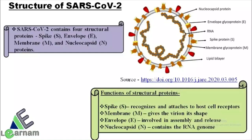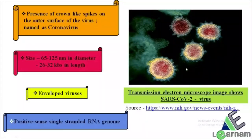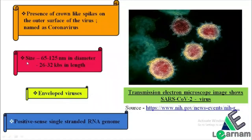The virus also has a lipid bilayer and RNA as its genetic material. This image of SARS-CoV-2 was captured using a transmission electron microscope. The presence of crown-like spikes on the outer surface of the virus gives it the name coronavirus. The size of SARS-CoV-2 is 65 to 125 nanometers in diameter and 26 to 32 kilobases in length. It is an enveloped virus with a positive-sense, single-stranded RNA genome.